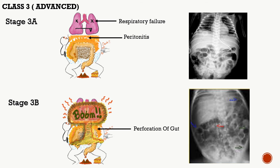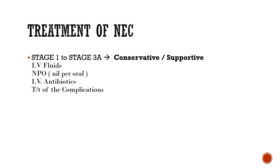You can review Bell's classification again to understand how the disease starts in the lumen and slowly progresses toward the mucosal wall, then spreads systemically. For treatment of NEC: from stage 1 to stage 3a, the gut is still holding its contents. Supportive or conservative treatment — to kill the agent and support the gut with IV fluids, nil per oral, and IV antibiotics — can save the patient from further complications.